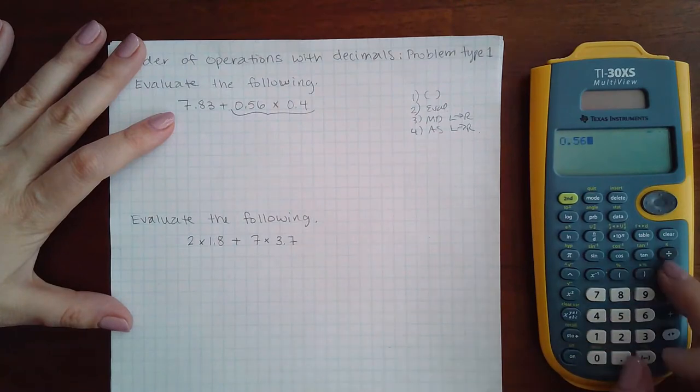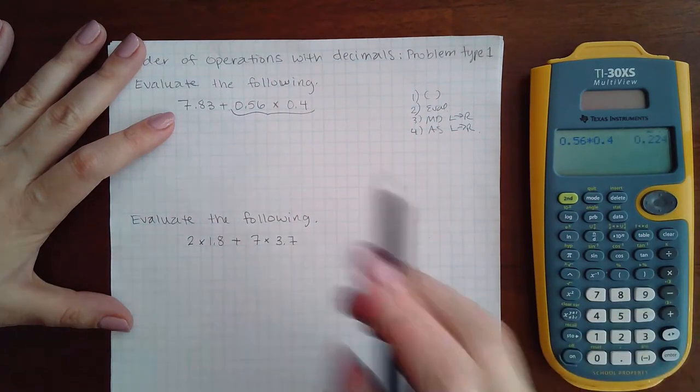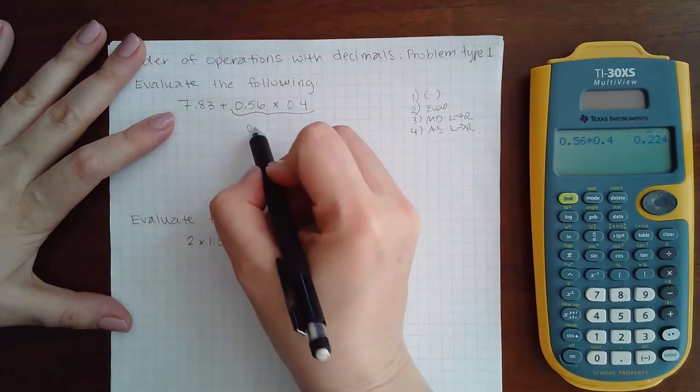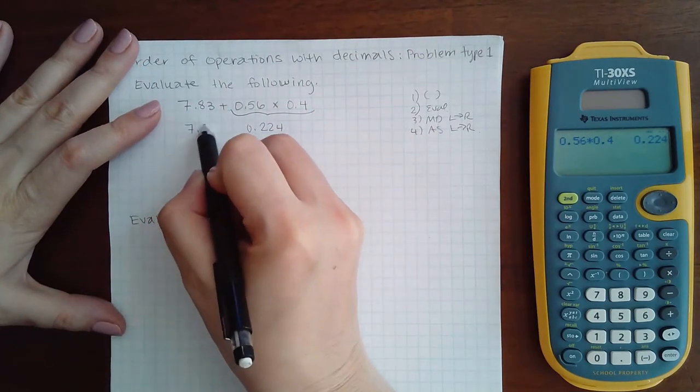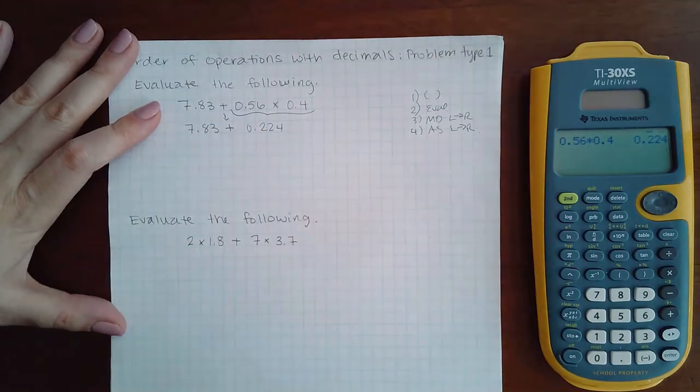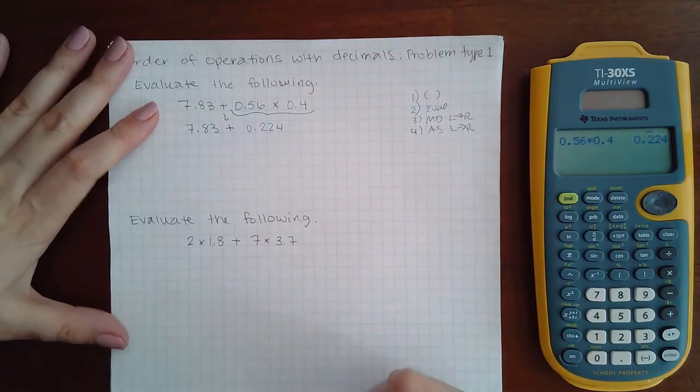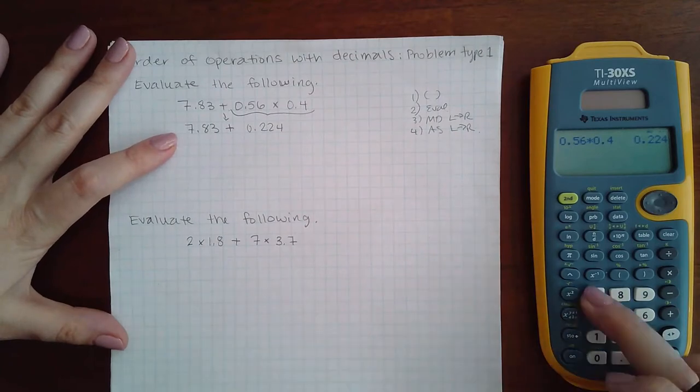So my calculator, I'm going to type 0.56 times 0.4 and I get 0.224. Now I'm going to bring down the 7.83 and the plus sign since I did not use it in my calculator.